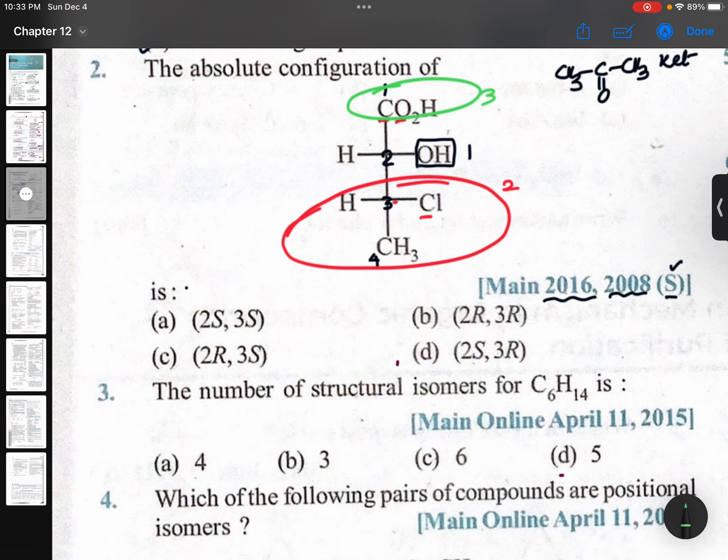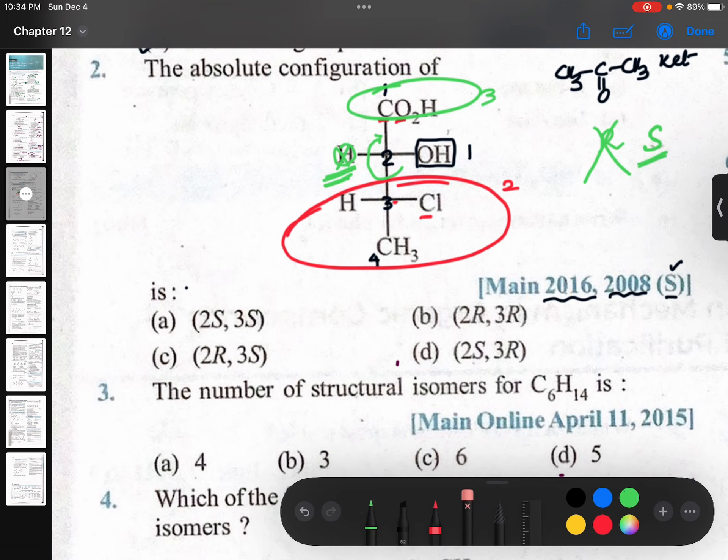So how your eye travels: one, two, three. Forget about this one. One, two, three, you ignore that hydrogen. Just you see you are moving in the clockwise direction, clockwise right. But if least priority group is on the horizontal line, clockwise means actually R, but if the least priority group is on the horizontal line convert it into S. Okay, now so second place S configuration.